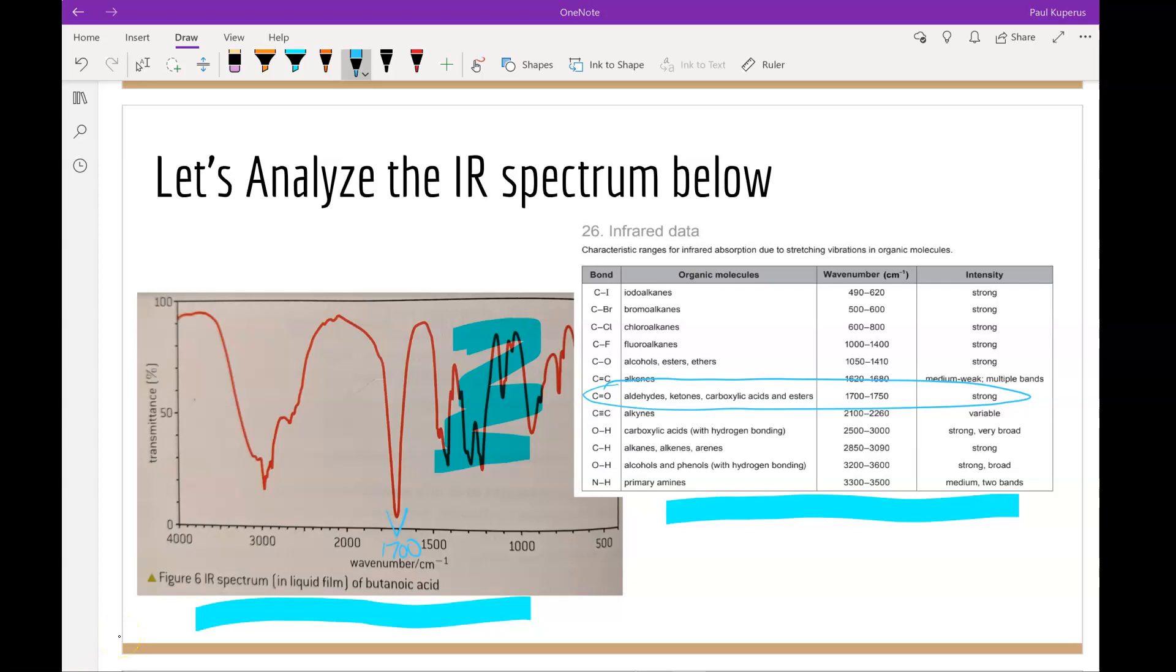Strong, medium, and weak refer to the amount of transmittance or the height of the peak. So a strong peak would have a very high degree of absorption or very low degree of transmittance. Broad refers to the width of the peak.